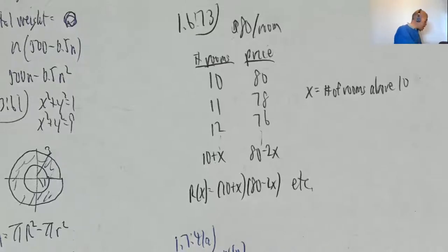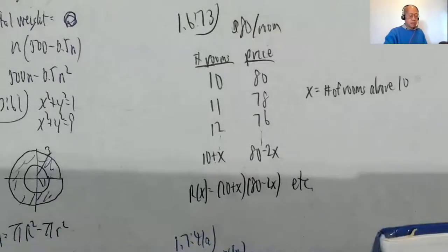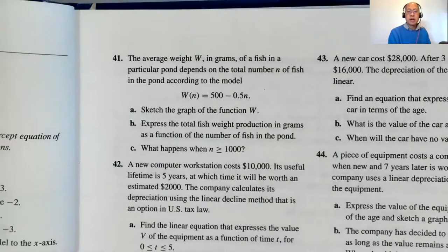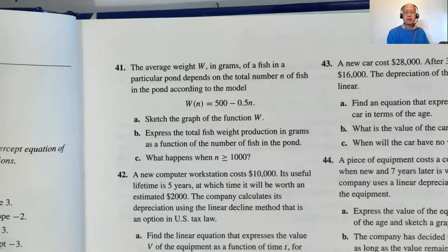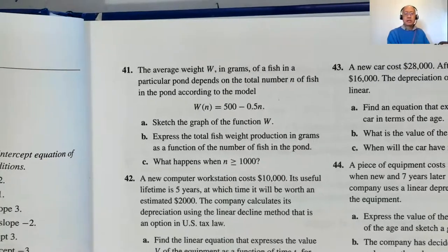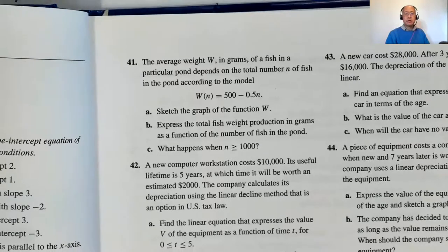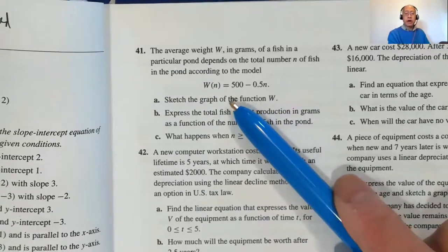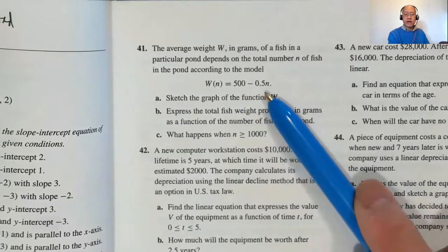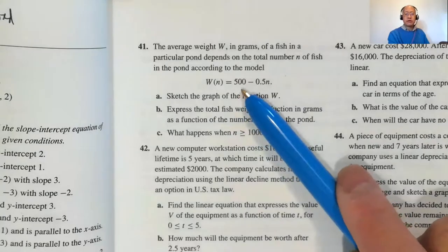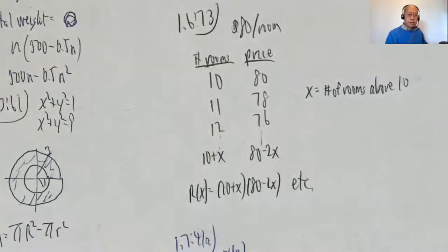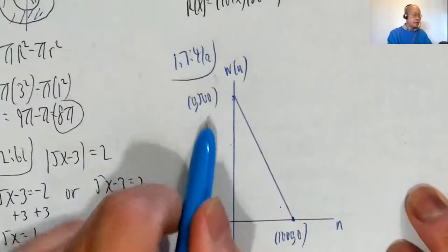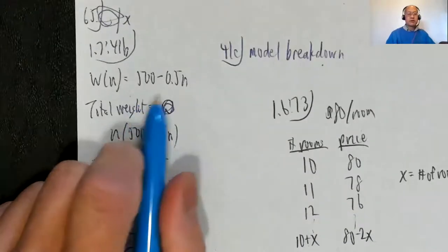There's a question about problem 41, so let me knock that off. I'm going to do 1.7 problem 41. The average weight in grams of a fish in a particular pond depends on the total number of fish in the pond. The graph should be fairly straightforward — it's almost like Y equals MX plus B, only it's negative 0.5N plus 500. The Y-intercept is 500 and the slope is negative 0.5.